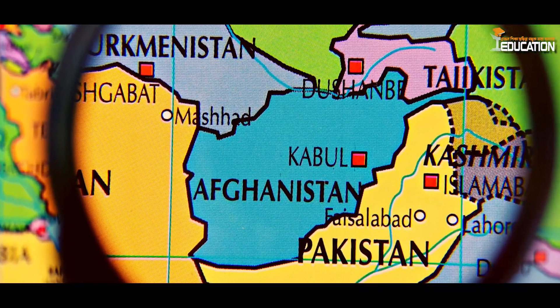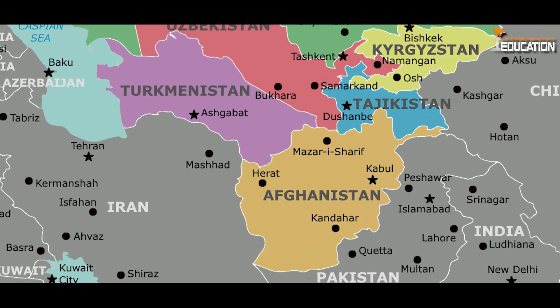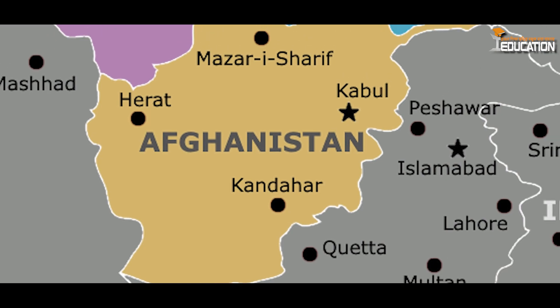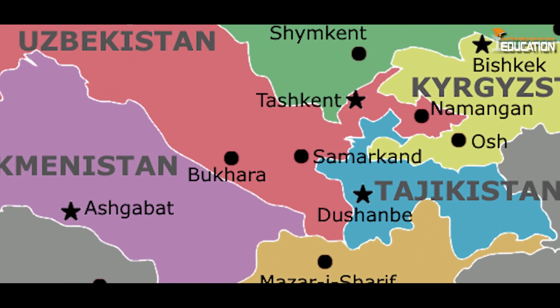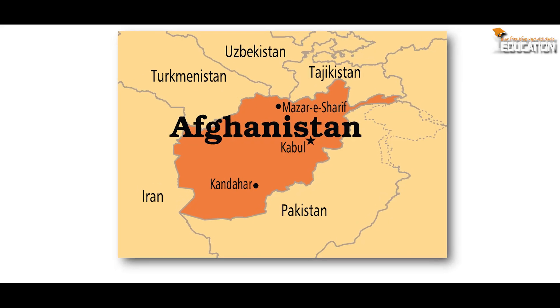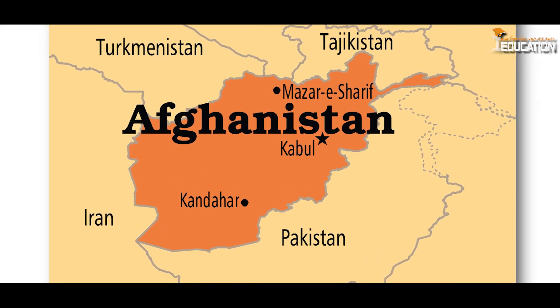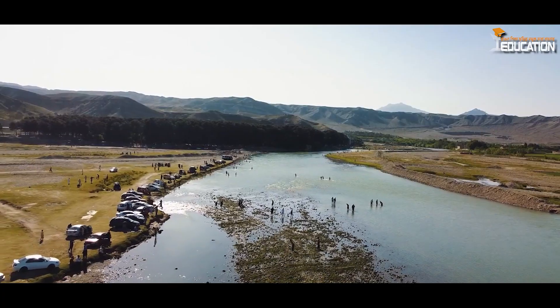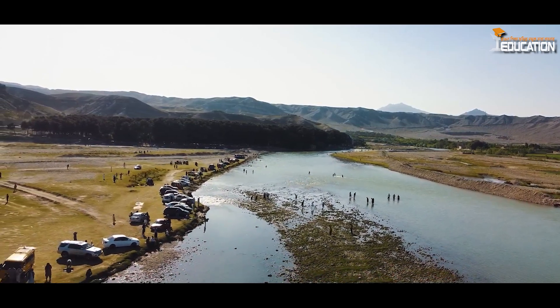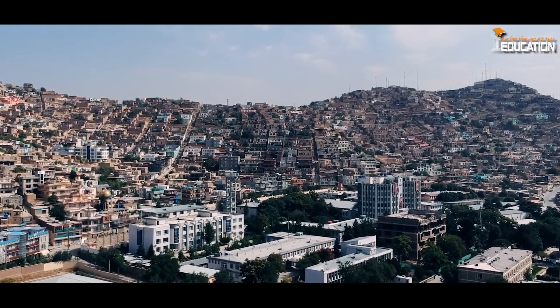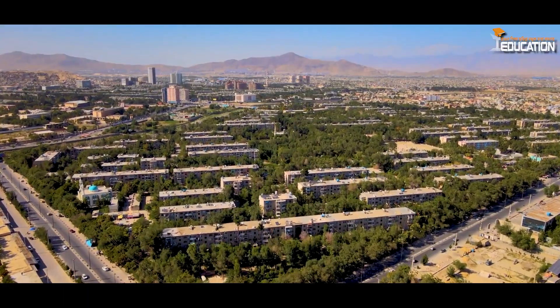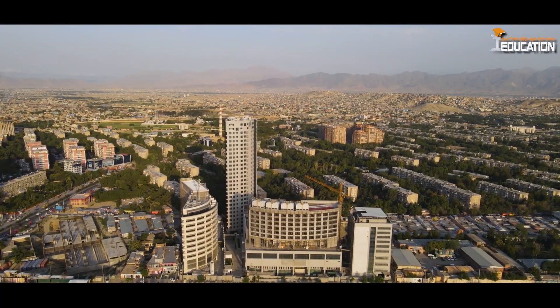Afghanistan is a landlocked country located in south central Asia. It is bordered by Pakistan to the east and south, Iran to the west, Turkmenistan, Uzbekistan and Tajikistan to the north, and China to the northeast. The country has an area of approximately 252,000 square miles. Administratively, Afghanistan is divided into 34 provinces, each governed by a governor appointed by the president of Afghanistan. The provinces are further divided into districts governed by district governors. The capital city of Afghanistan is Kabul, which is also the country's largest city.